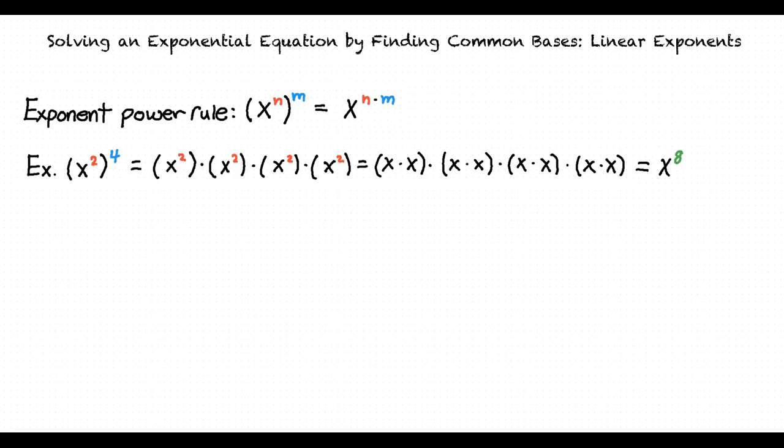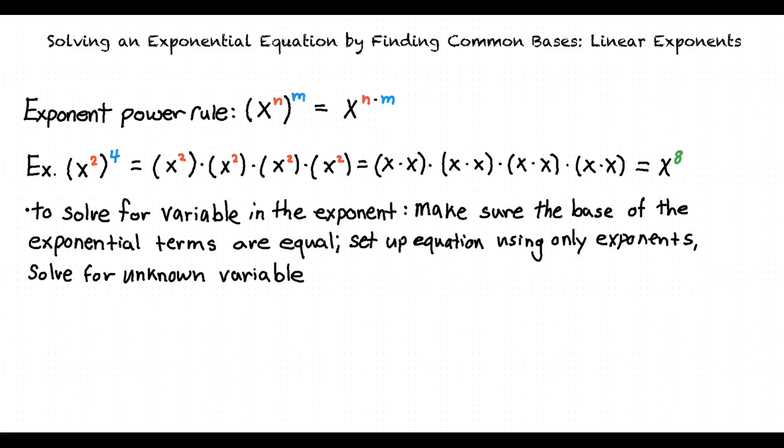Okay, this all seems to make sense to me. But how do we solve for variables in the exponents of an exponential equation? Good question. One way to solve for a variable in the exponent is to make sure that the base of the exponential terms are equal. If the bases are equal, then we can solve for the variable in the exponent by creating an equation only using the exponent values.